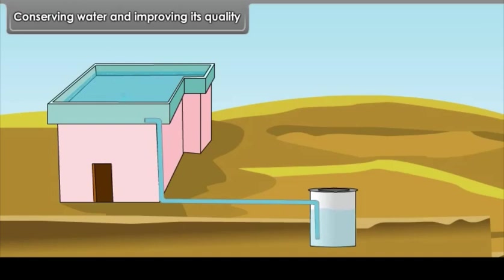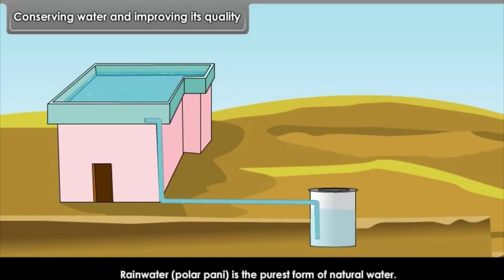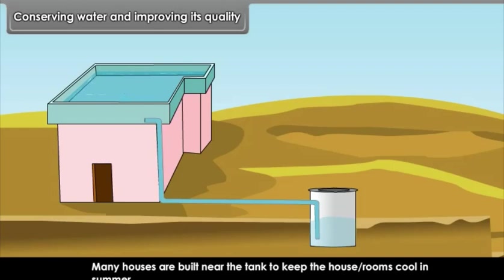Do you know? Rainwater can be stored in the tank for 3 to 5 years, making it a regular source of drinking water. Rainwater is the purest form of natural water. It is often used to cure ailments of sick people. Many houses are built near the tank to keep the house or rooms cool in summer.